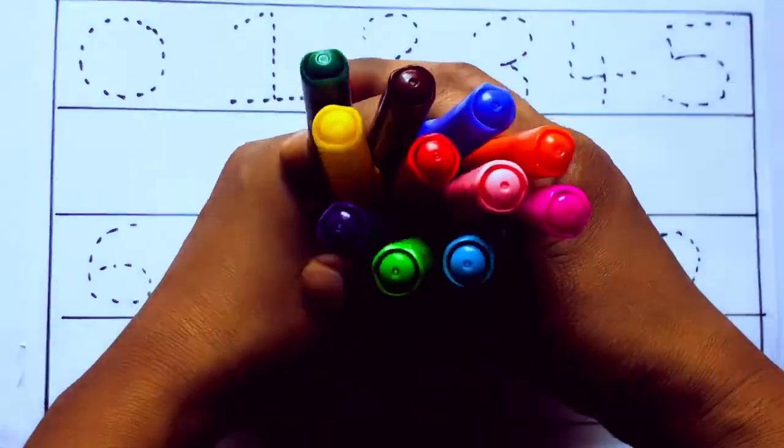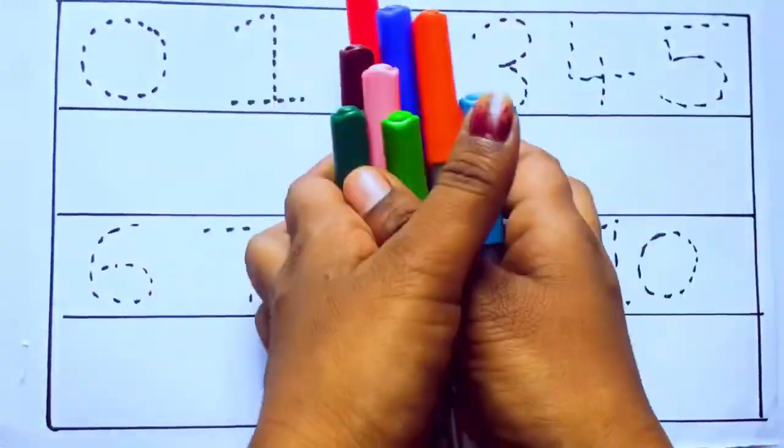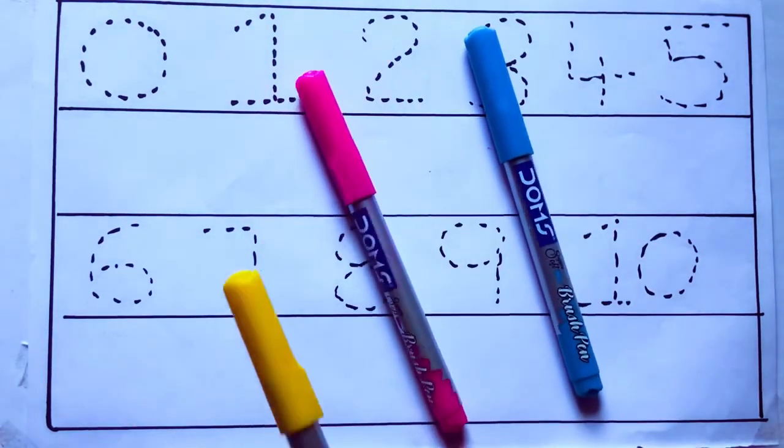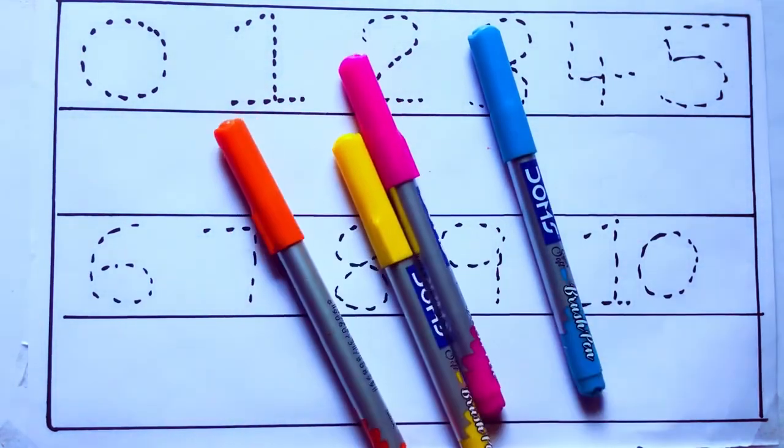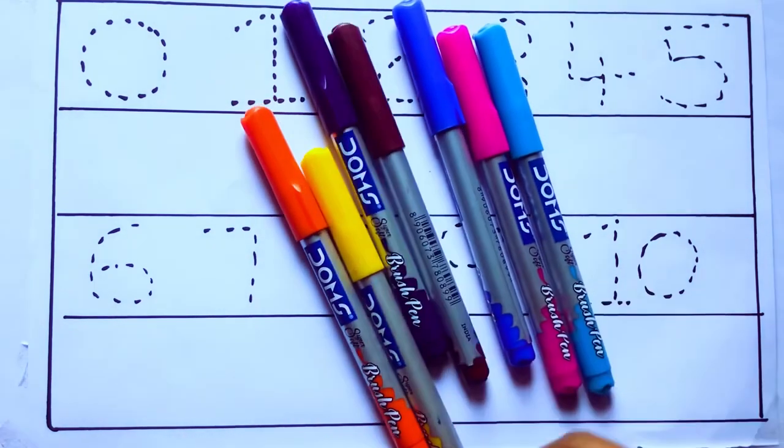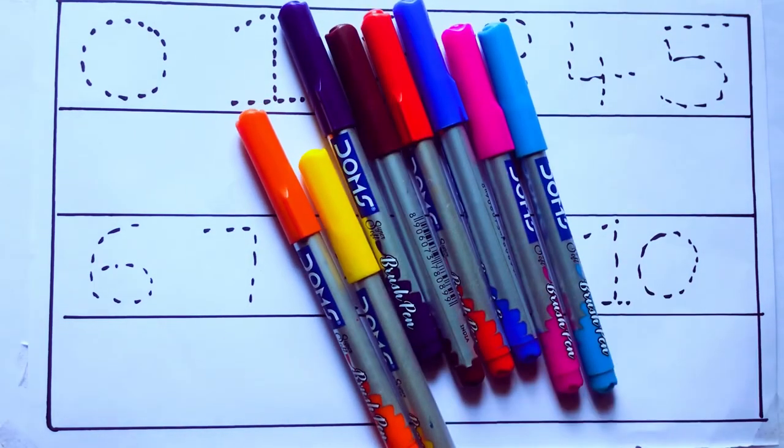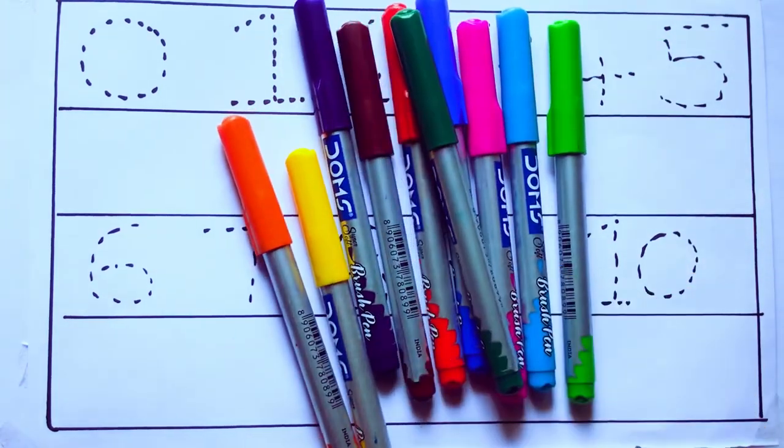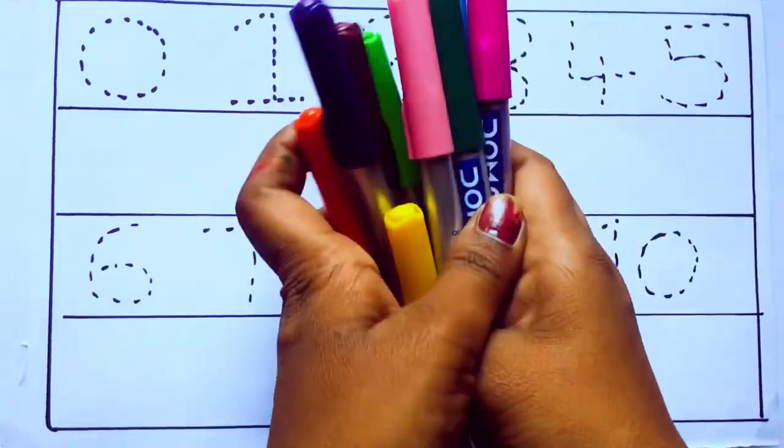Let's learn some colors. These are all the color pencils. Let's learn the names. Sky blue color, pink color, yellow color, orange color, violet color, blue color, brown color, red color, green color, and pink color.